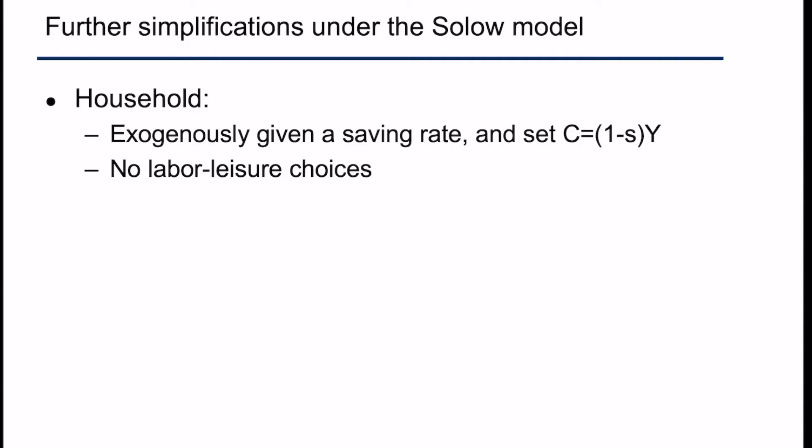In addition, we make another simplifying assumption: there are no labor-leisure choices. We assume that if everyone is assigned a job with, say, 12 hours of work, then each individual will work for 12 hours. So we don't need to model how individuals allocate their time between labor and leisure, which makes the model simpler because fewer decisions are being made.